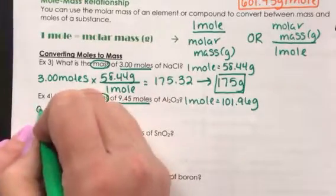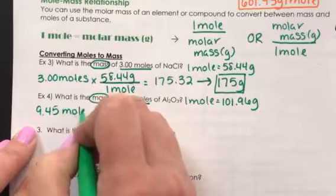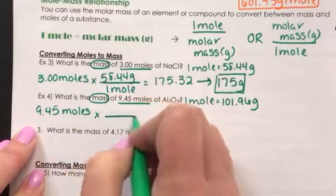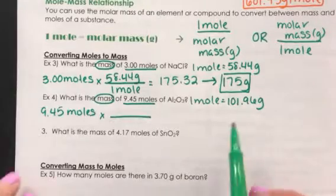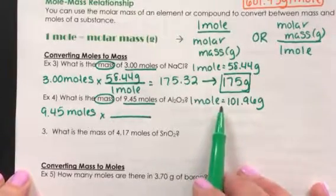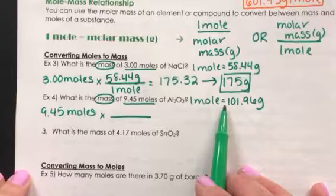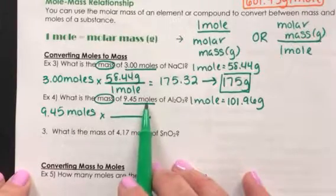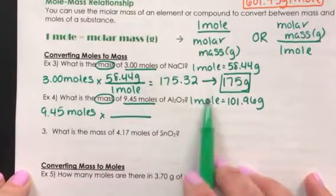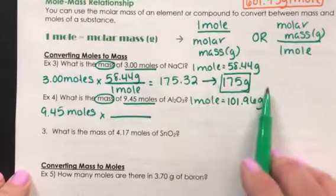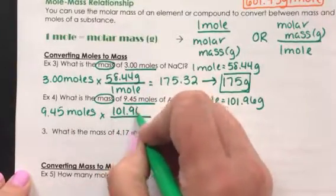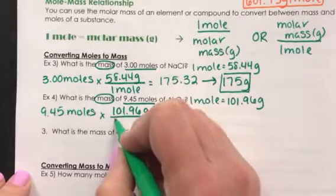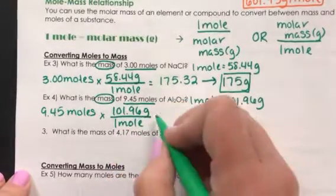So I want to start with the measurement that I'm given, 9.45 moles. And again, to change between moles and grams, I'm going to multiply by a proportion that I create from this relationship. Just as with example three, since we're going from moles to grams, our answer should be getting larger. So we would like the molar mass in the numerator, the 101.96, and then one mole in the denominator.